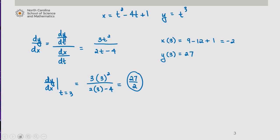So our tangent line is y - 27 = (27/2)(x + 2). This simplifies to y = (27/2)(x + 2) + 27.